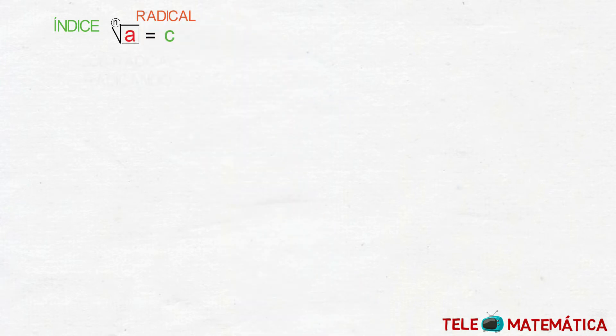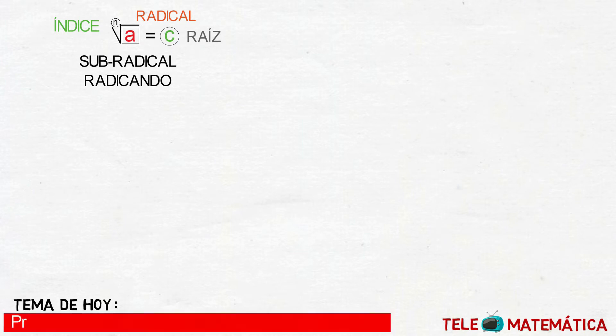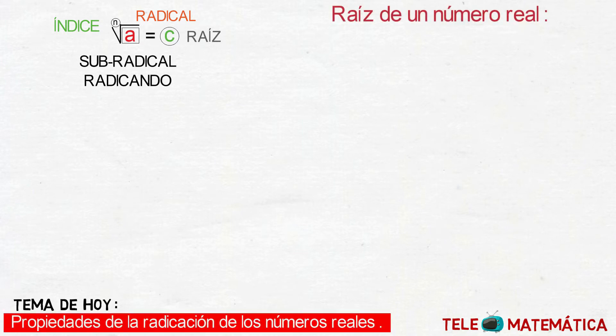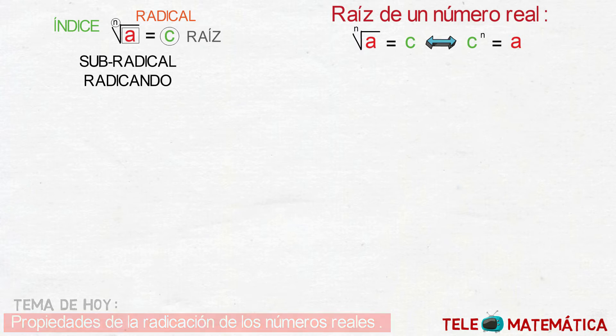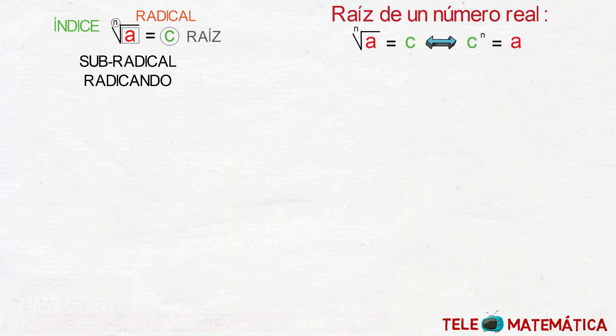Para comenzar con el video, y continuando con el tema sobre las operaciones con números reales, recordaremos que la radicación está definida por la expresión: raíz enésima de A va a ser igual a C, donde el elemento N se denomina índice, el radical, el elemento A se denomina subradical o radicando, y el elemento C se denomina raíz. La raíz de un número real está definida como raíz enésima de A igual a C, si y solo si la raíz elevada al índice es igual al subradical. A continuación definiremos las principales propiedades de la radicación para los números reales.